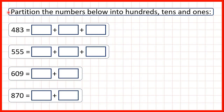We need to partition the numbers below into hundreds, tens and ones. So we need to remember that in three-digit numbers like we have here, the first digit tells us how many hundreds we have, then we have our tens digit, and the digit on the end is our ones digit.